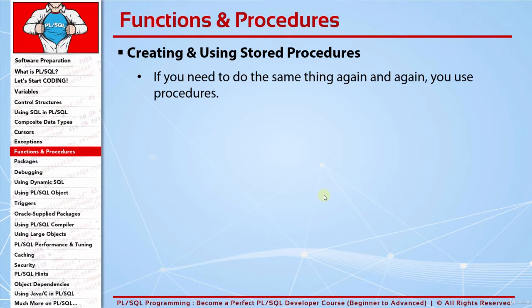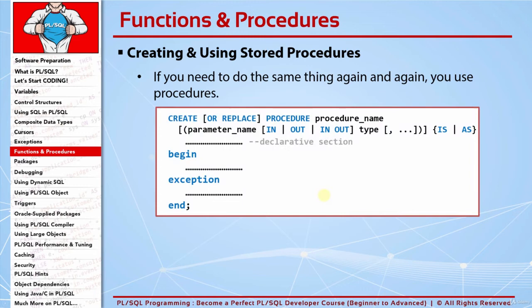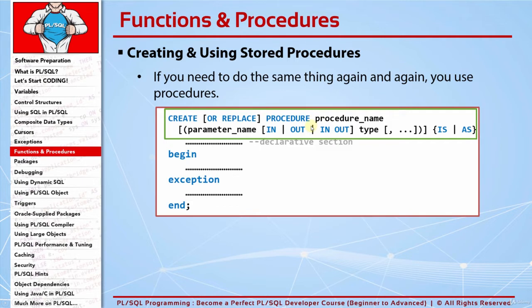Let's see how we create procedures. The usage is pretty similar to anonymous blocks except for the declaration area. Different from anonymous blocks, we delete the DECLARE keyword and write our procedure declaration. To do that, we first start with the CREATE keyword. Then we can write OR REPLACE keywords — we write that if we want to modify an existing procedure. If we are creating right now, we don't need to write that, but we can write it and it will be accepted anyway.